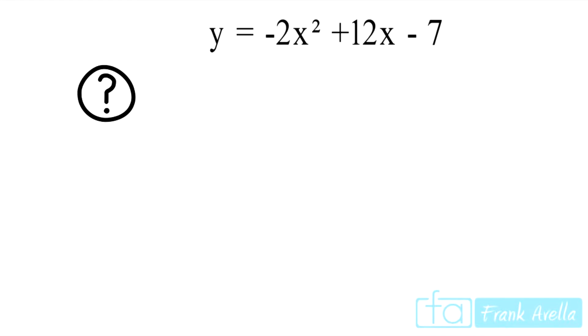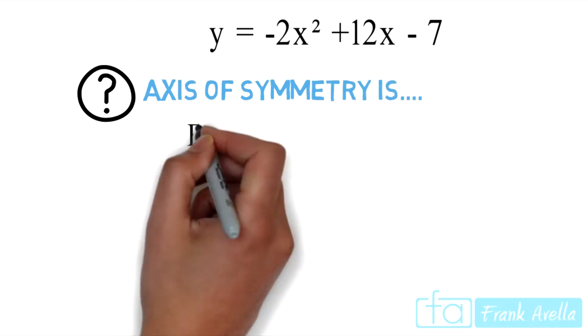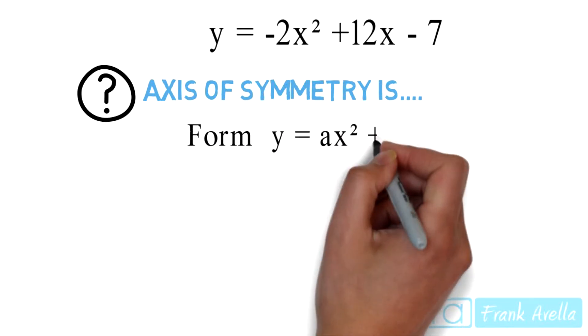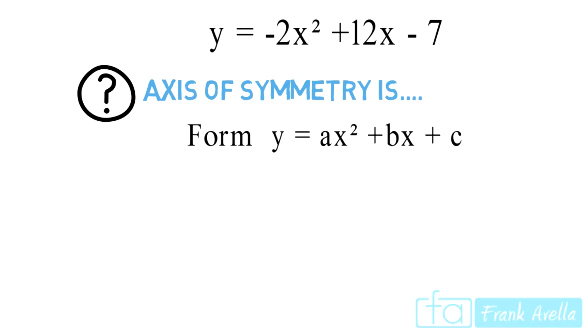The question that was given to us was to find the axis of symmetry. In finding the axis of symmetry, you're going to want your function to be in the form y equals ax squared plus bx plus c, which matches up to the function that was given to us.